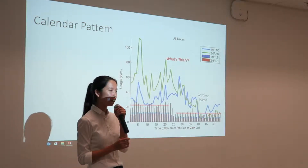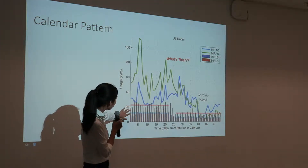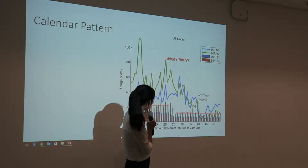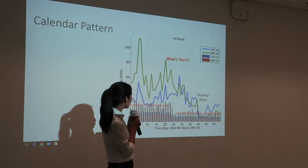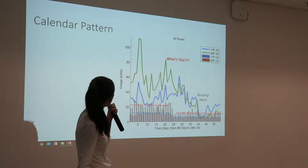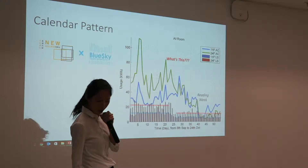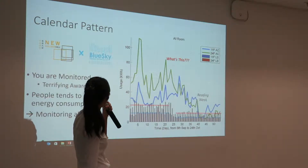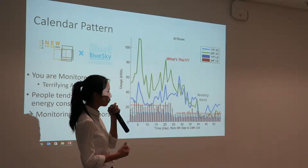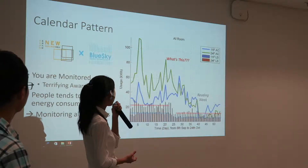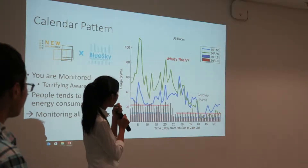I will talk more about the pattern of energy consumption. As we can see from this graph, starting from September 27th, there is a sudden decline in energy consumption on both floors. When we look at the reason for this sudden decline, it is actually due to the announcement of the launching of the Blue Sky program. Because of this program, people knowing they are being monitored tend to reduce their energy consumption.